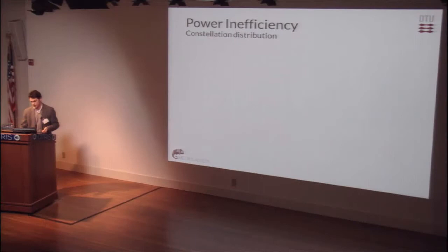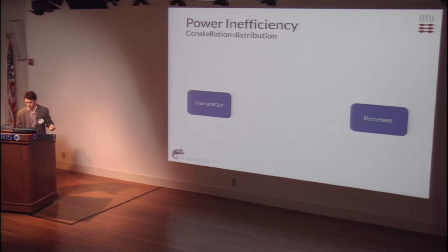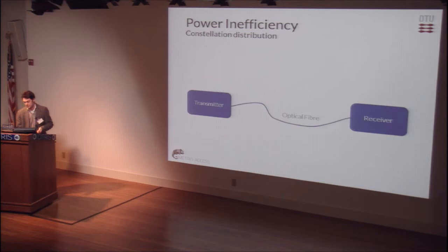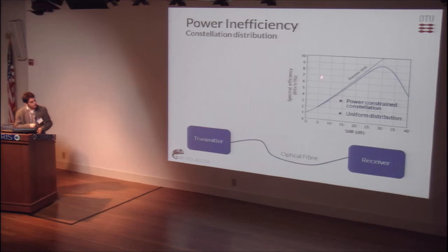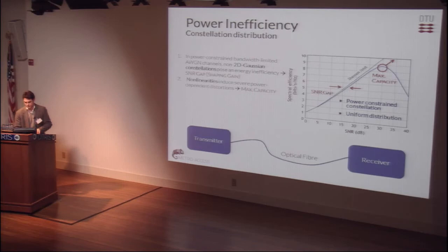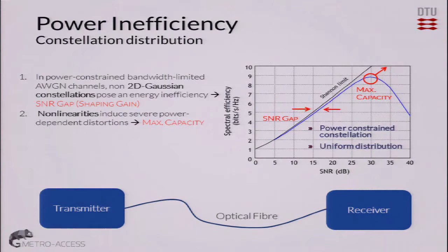In order to see what the real problem is, I prepared this simple link: there's a transmitter, a receiver, and an optical fiber. We transmit through it one of these regular grid, uniformly perfect QAM distributions, n times m to make it general, and we analyze the spectral efficiency versus virtual signal-to-noise ratio. This is a qualitative analysis, so don't pay much attention to the numbers. The conditions are uniform distributions and a power-constrained constellation — we don't have infinite power. We also plot the Shannon limit as a reference, and in blue our outcome. The first thing we observe is a signal-to-noise ratio gap between what we obtain and the Shannon limit, for the same spectral efficiency. This SNR gap, also called shaping gain, is a quantification of the inefficiency of this particular constellation under analysis, and it's characteristic of every modulation format.